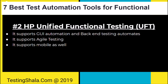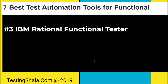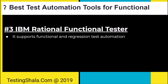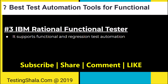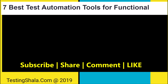The third best automation tool is IBM Rational Functional Tester, also known as IBM RFT. IBM RFT supports functional and regression test automation — this tool can be used to automate both functional and regression tests. It majorly supports data-driven testing.